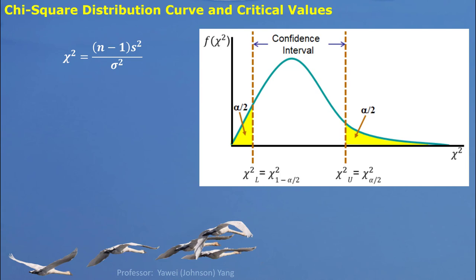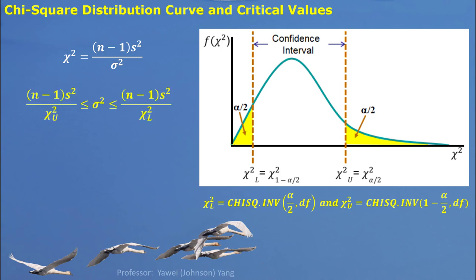When we build up a confidence interval, it would be around the center. This shows where the lower and upper chi-square critical values are located — they are around the center, and each tail is assigned half of the significance level. So the center part represents the confidence level 1-alpha. We have this confidence interval expressed by sample variance, sample size, and chi-square critical values.